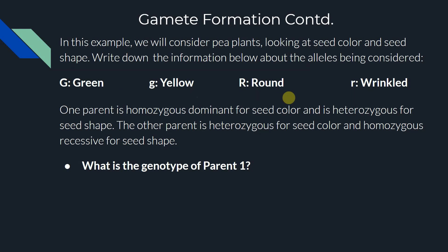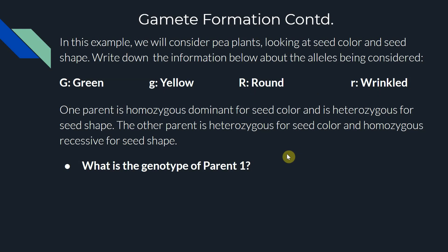When we break down parent one: homozygous dominant for seed color means two copies of the dominant allele — big G, big G. Heterozygous for seed shape means one dominant and one recessive allele — big R, little r. When we combine those together, the genotype for parent one should be big G, big G, big R, little r.